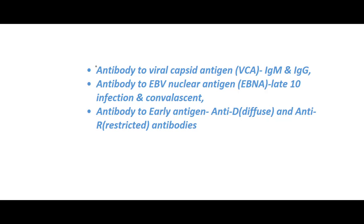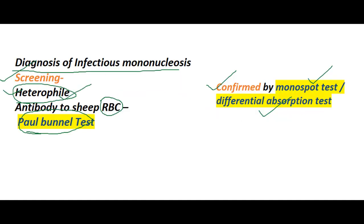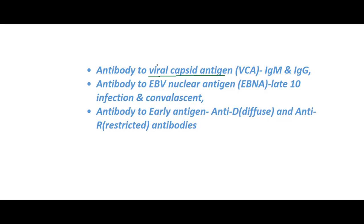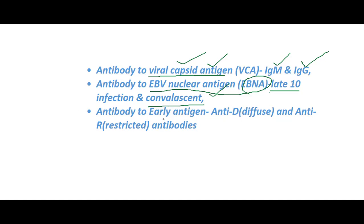Coming to some antibodies produced against EBV: there is a viral capsid antigen antibody, as well as heterophile antibody. IgM and IgG antibodies to viral capsid antigen (VCA) are produced, along with an antibody to EBV nuclear antigen (EBNA). Antibodies to nuclear antigen are present in the late infection and convalescent phase. Some antibodies are also developed to early antigen — these are anti-diffuse (anti-D) and anti-R (restricted) antibodies.